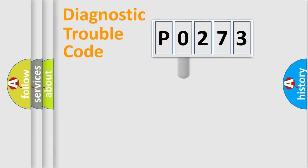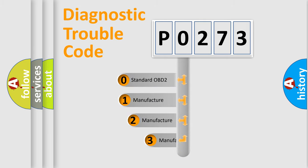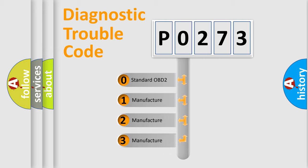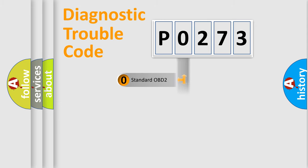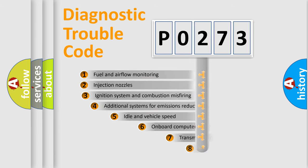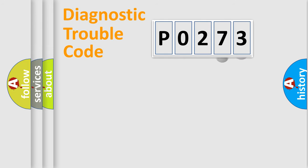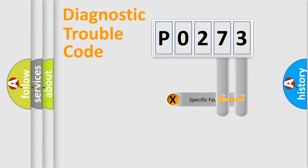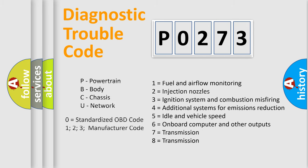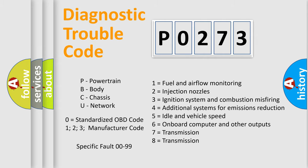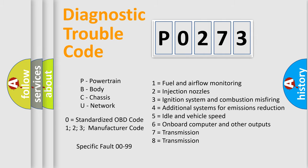This distribution is defined in the first character of the code. If the second character is expressed as 0, it is a standardized error. In the case of numbers 1, 2, or 3, it is a manufacturer-specific error. The third character specifies a subset of errors, valid only for standardized DTC codes. Only the last two characters define the specific fault of the group, and this division is valid only when the second character is 0.